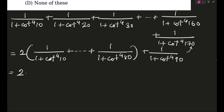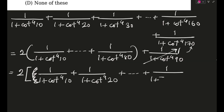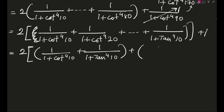Next, we can try to convert this into tan, because cot 90° = 0 so that term becomes 1. I will try to pair up identical terms: 1/(1 + cot⁴10°) + 1/(1 + tan⁴10°), then 1/(1 + cot⁴20°) + 1/(1 + tan⁴20°), and continuing this pairing.